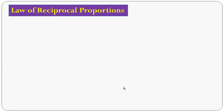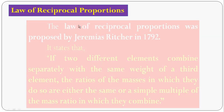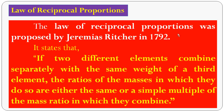Now come to the fourth law, Law of Reciprocal Proportions. The Law of Reciprocal Proportions was proposed by Jeremias Richter in the year 1792. This law states that if two different elements combine separately with the same weight of a third element, the ratio of masses in which they do so is either the same or a simple multiple of the mass ratio in which they combine with each other.